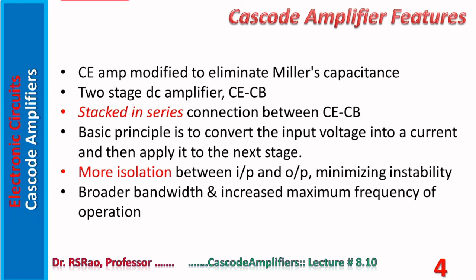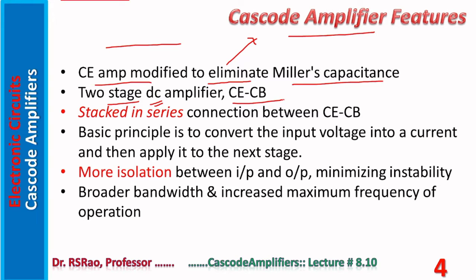Some important key points about cascode: In simplest possible terms, a cascode is a CE amplifier modified to eliminate Miller's capacitance. This modification is the addition of a CB stage. It is a two-stage, direct-coupled amplifier with stages CE–CB connected in a stacked series connection. The basic principle is to convert input voltage into a current and apply it to the next stage. Cascode provides more isolation between input and output, minimizing instability.